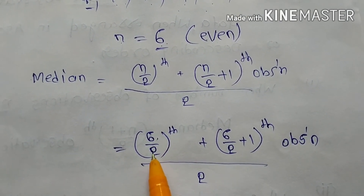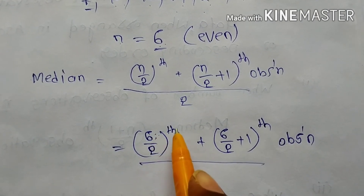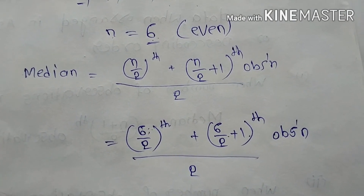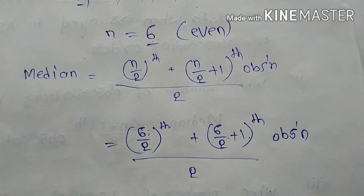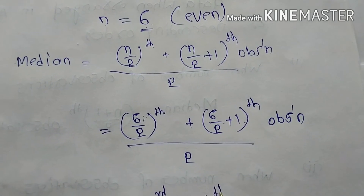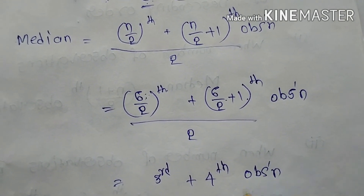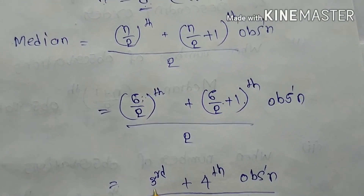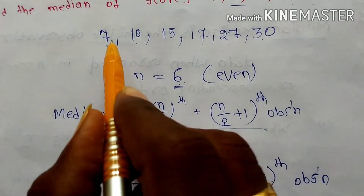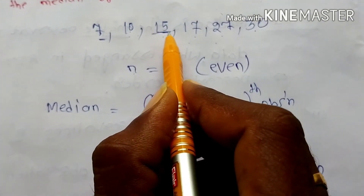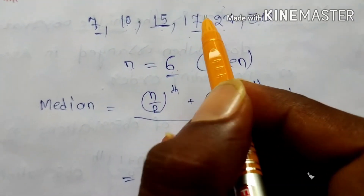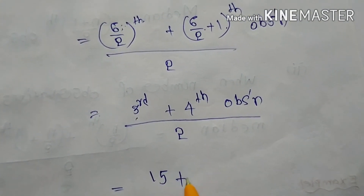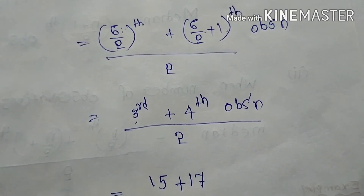So we need the average of the 3rd and 4th observations. Counting from the ascending order: the 3rd observation is 15, and the 4th observation is 17. So median equals (15 + 17) / 2.